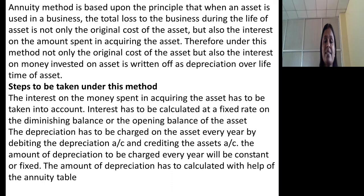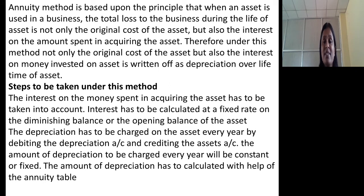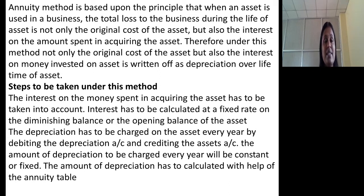This method is based on the principle that when an asset is used in a business, the total loss to the business during the lifetime of the asset is not only the original cost of the asset, but also the interest on the amount spent on acquiring the asset. Sometimes the amount invested on the asset may be borrowed, so the interest paid on such amount must also be taken into consideration. Therefore, under this method, not only the original cost but also the interest on money invested on the asset is written off as depreciation over the lifetime of the asset. Depreciation to be charged will remain constant, taking into consideration both original cost and interest on the amount invested.